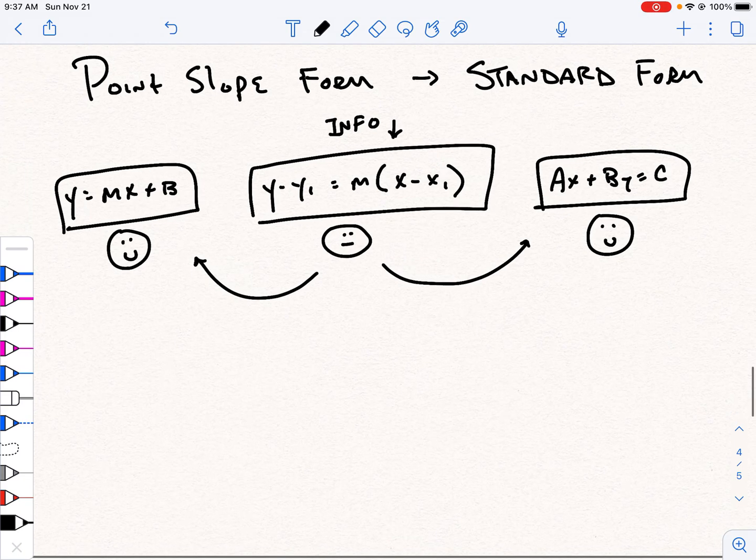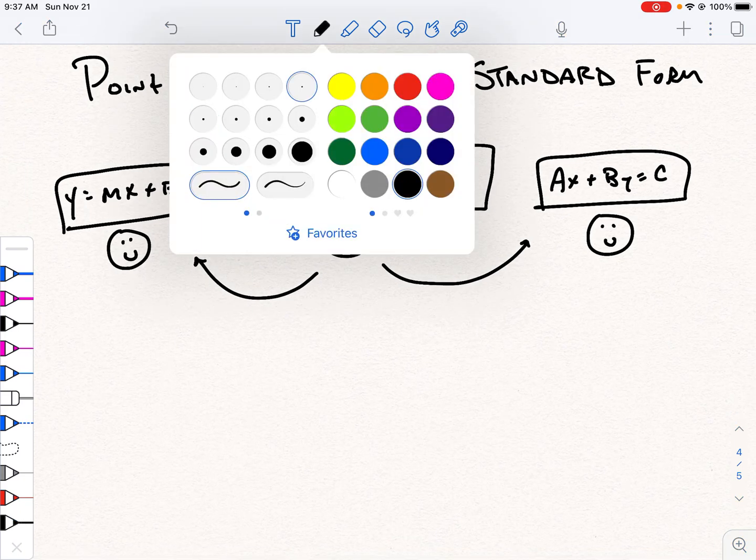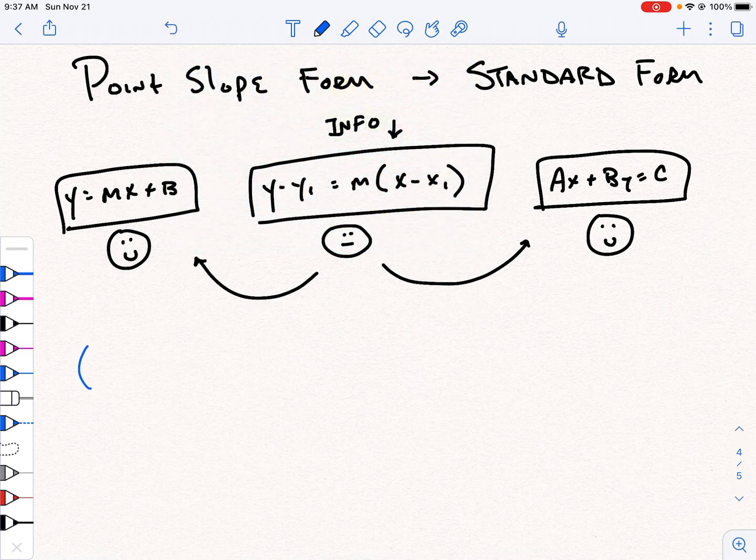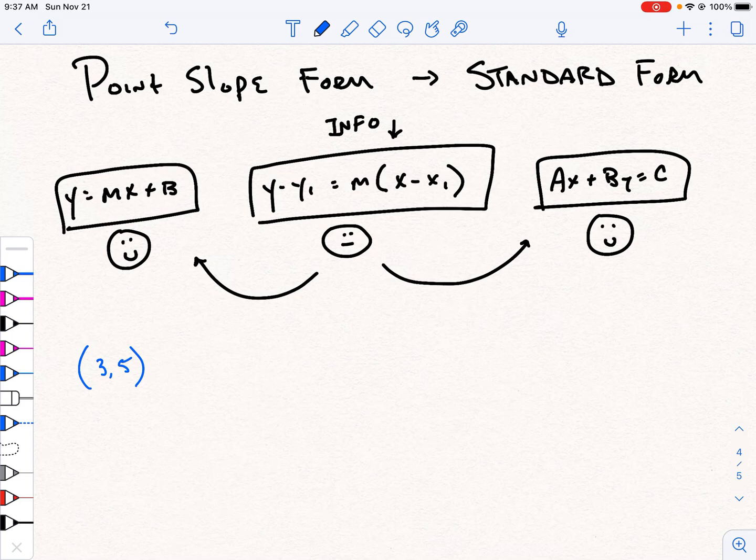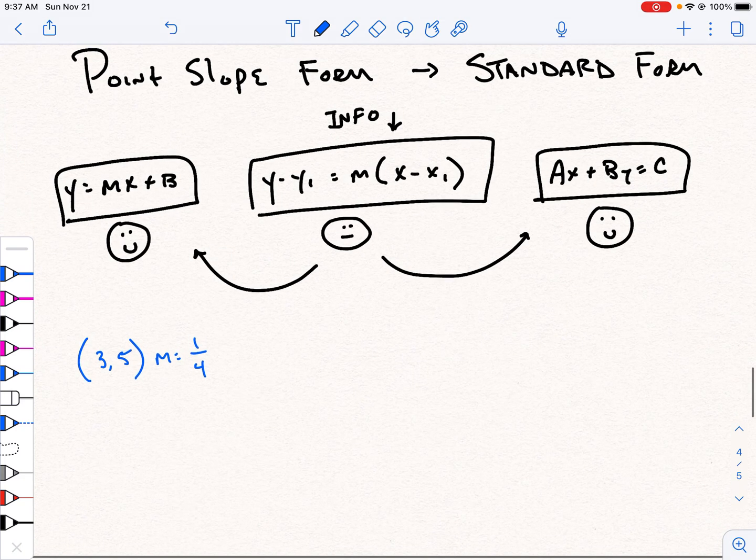So one example here. Let's imagine we have a point, 3, 5, for example. And let's imagine we have a slope of, I don't know, let's go with 1 fourth. Now, I'm choosing these kind of at random, so it's very possible we're going to get kind of an ugly answer. But ugly answers are answers nonetheless.